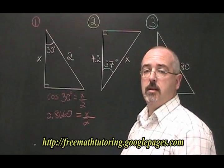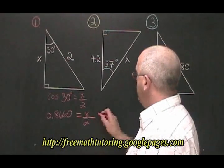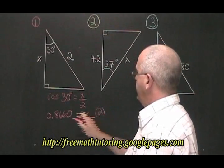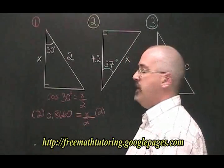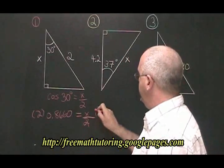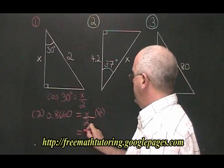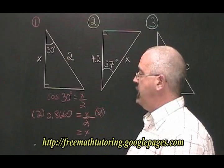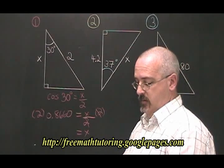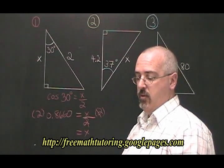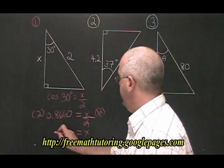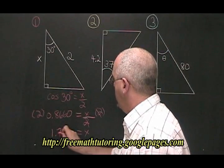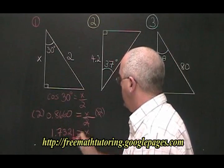Then, since our x is being divided by 2, we multiply both sides by 2. These 2's cancel out. x is therefore equal to 2 times 0.8660, which is 1.7321. We have our answer.